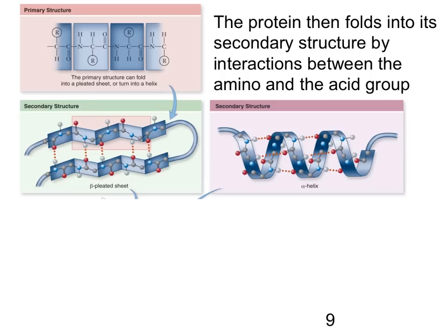The next step is the folding into the secondary structure, and proteins can fold into secondary structure by making these beta sheets, or they can form alpha helices. So these are the two main secondary structures that proteins form. And these secondary structures are formed by interactions between the amino group of one amino acid and the acid group of another one, forming hydrogen bonds. So hydrogen bonds is what is holding together the secondary structure of a protein.